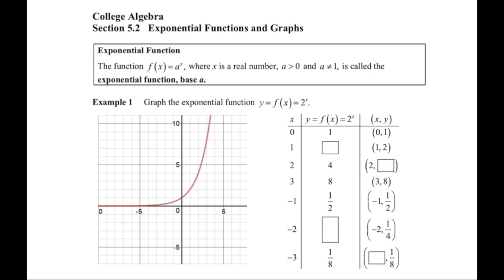Our first example is to graph the function f(x) = 2^x. Everywhere I see x, I'm going to replace my x value. So 2^0 is 1, 2^1 is 2, 2^2 is 4, 2^3 is 8. For negative exponents: 2^(-1) becomes 1/2, 2^(-2) becomes 1/4, and 2^(-3) becomes 1/8. So we have these x and y values that we can plot, and on the left I have our graph.